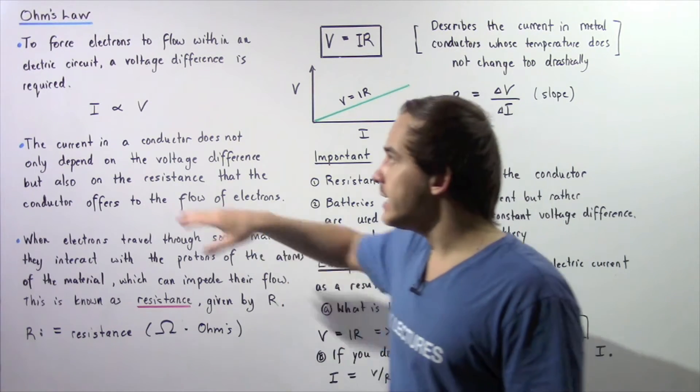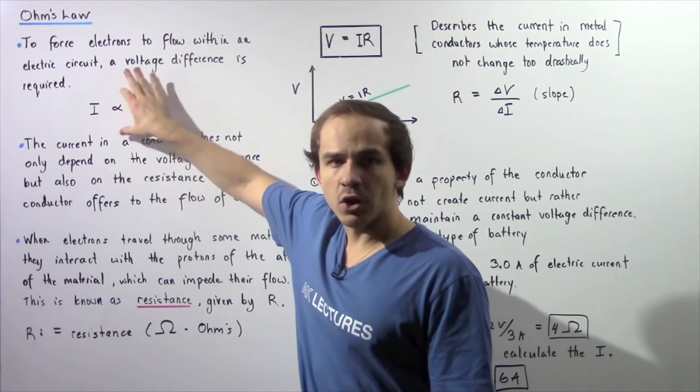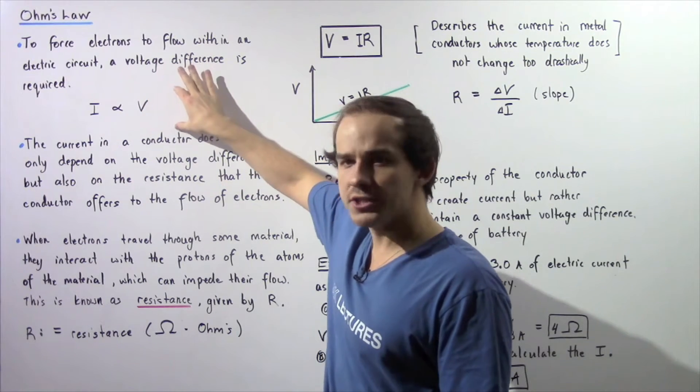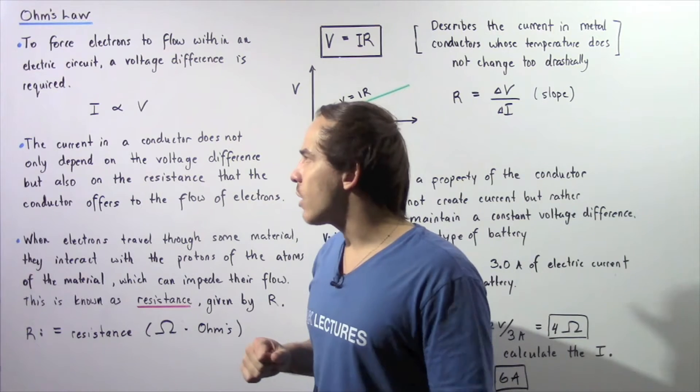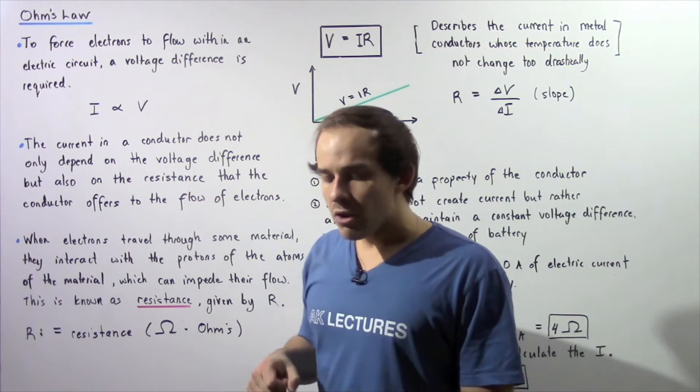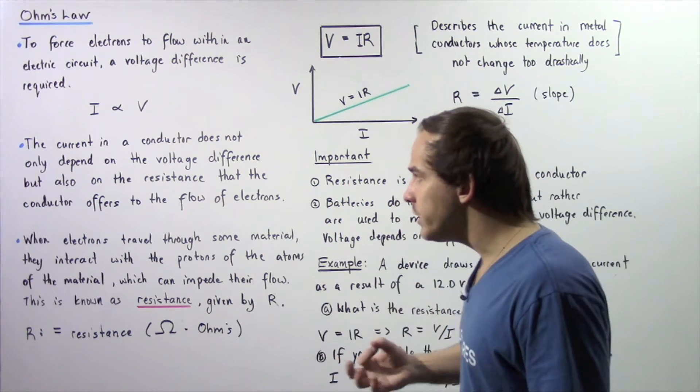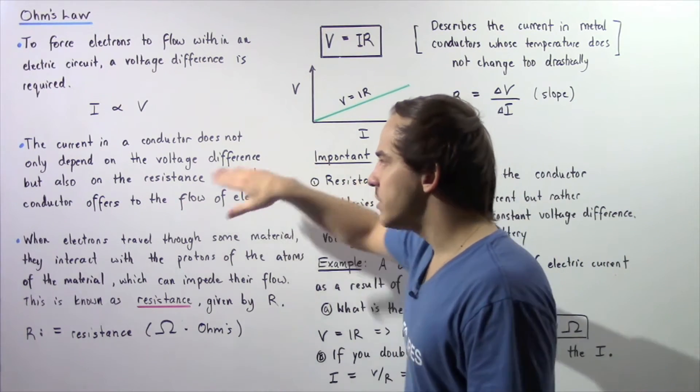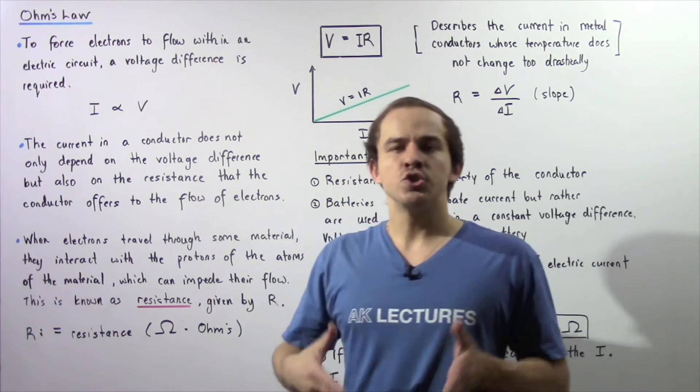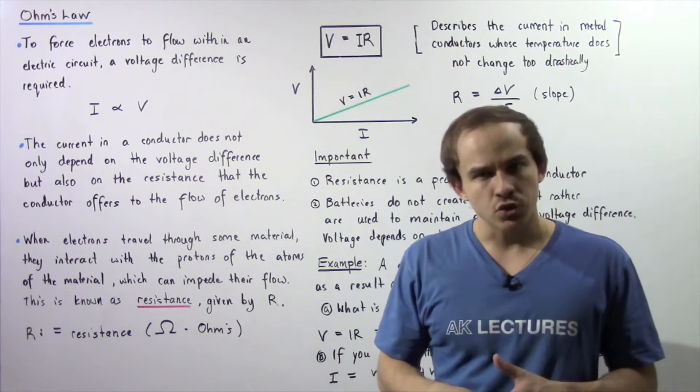From experiments, we see that the electric current is directly proportional to our voltage difference. So if we increase the voltage difference, we'll increase our electric current. Now the electric current does not only depend on voltage difference. It also depends on the resistance that the conductor offers to the flow of electrons.